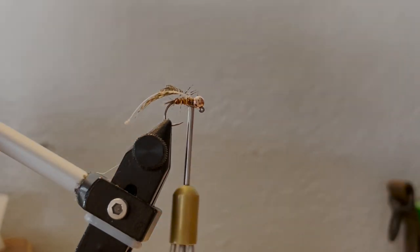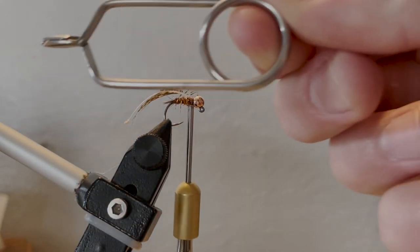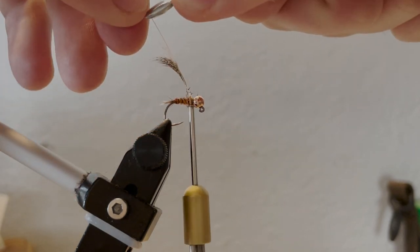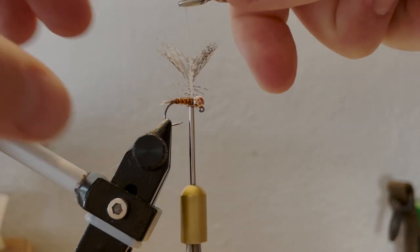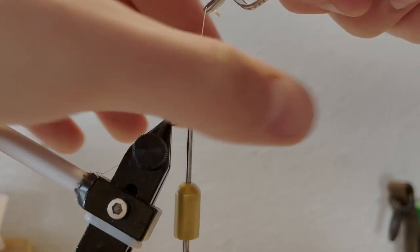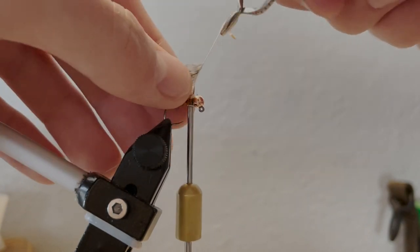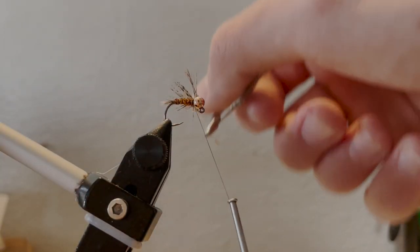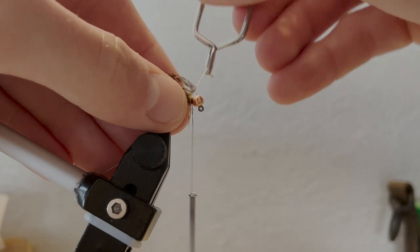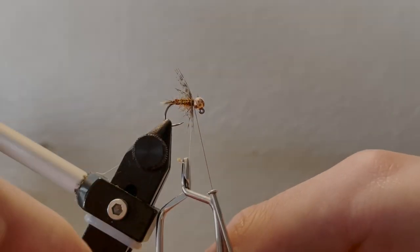Next, grab some hackle pliers. Grab your feather from the tip, fold your fibers back just like that, then you just start wrapping it in touching turns, one right in front of the other.